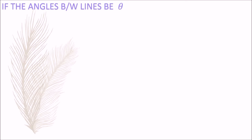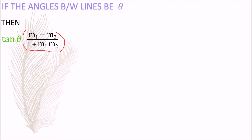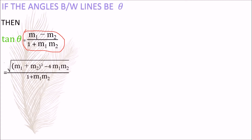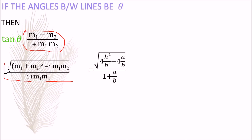If the angle between the lines is θ, then tan θ = (m₁ - m₂) / (1 + m₁m₂). We know that (m₁ - m₂)² = (m₁ + m₂)² - 4m₁m₂. So the numerator takes the form √[(m₁ + m₂)² - 4m₁m₂]. Substituting m₁ + m₂ = -2h/b and m₁m₂ = a/b, the expression for tan θ becomes √[4h²/b² - 4a/b] / (1 + a/b).